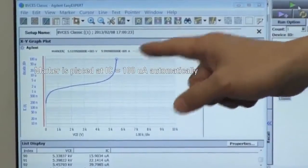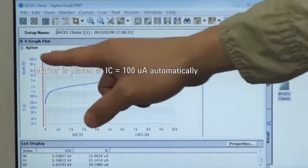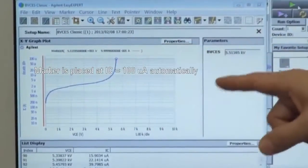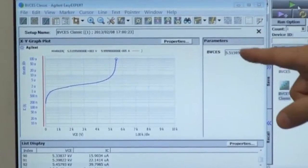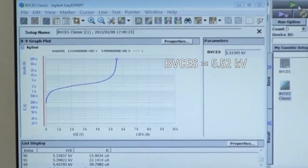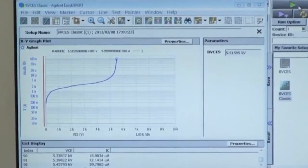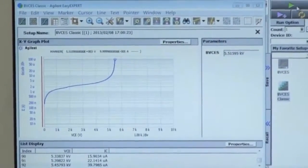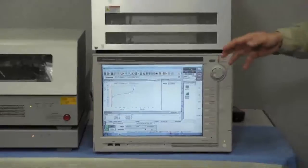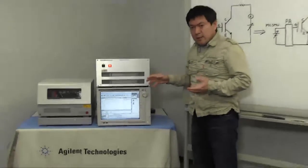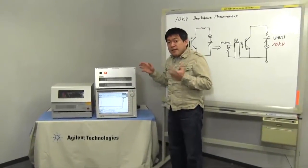And also breakdown voltage at 100 micro ampere is automatically extracted like as here. So by using these functions, you can measure breakdown voltage of high power devices very easily and safely.